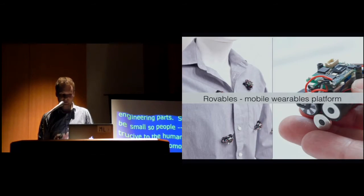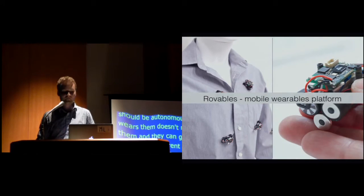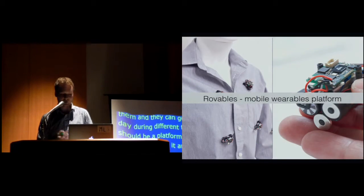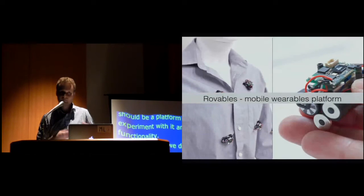So with that, we designed the Rovables, which is a mobile platform for wearable mobile electronics. And this is kind of low-cost prototyping tool. It's very low-cost, and they're untethered, so they have all the onboard functionality, and they can move on fabric in any direction.